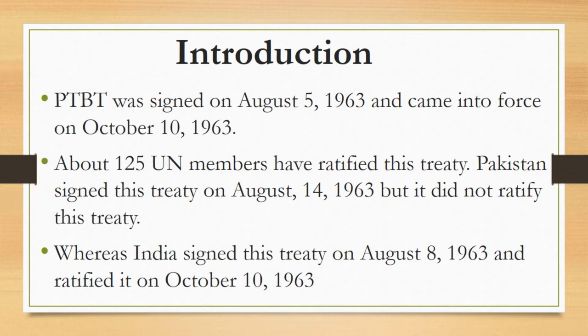This treaty was signed on August 5, 1963. It came into force on October 10, 1963. There were four original parties to this treaty including the US, UK, Northern Ireland, and Soviet Union. About 125 UN members have ratified this treaty.